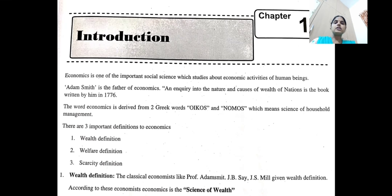The first one is the wealth definition. The classical economists like Professor Adam Smith, J.B. Say, and J.S. Mill have given the wealth definition of economics.